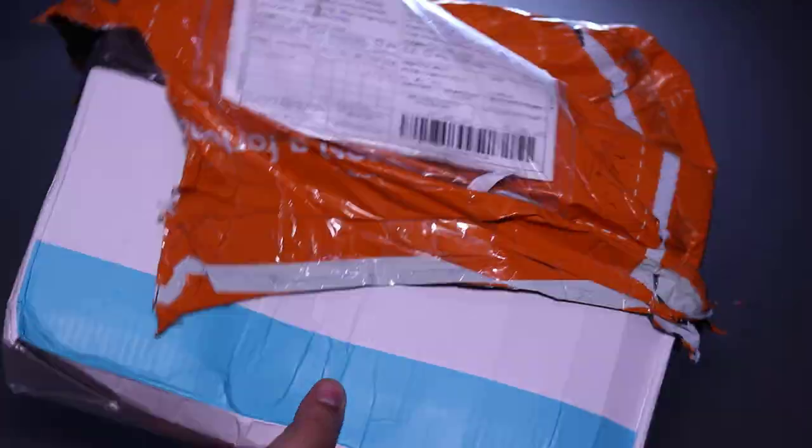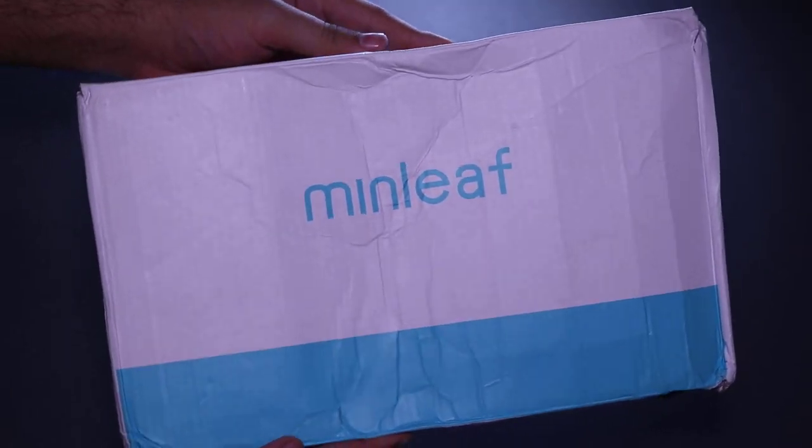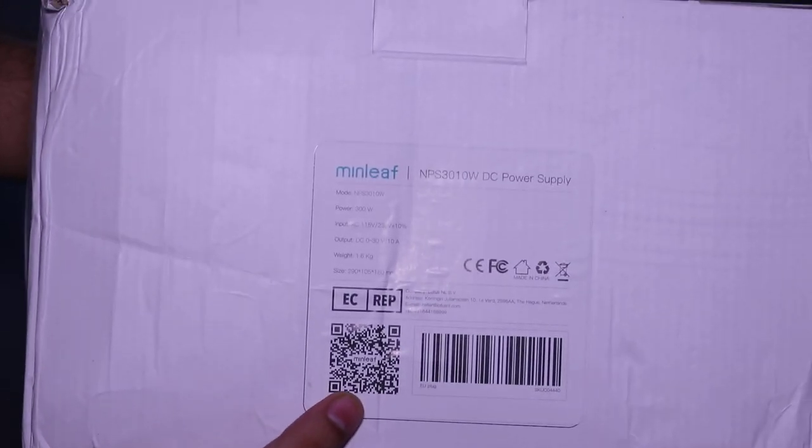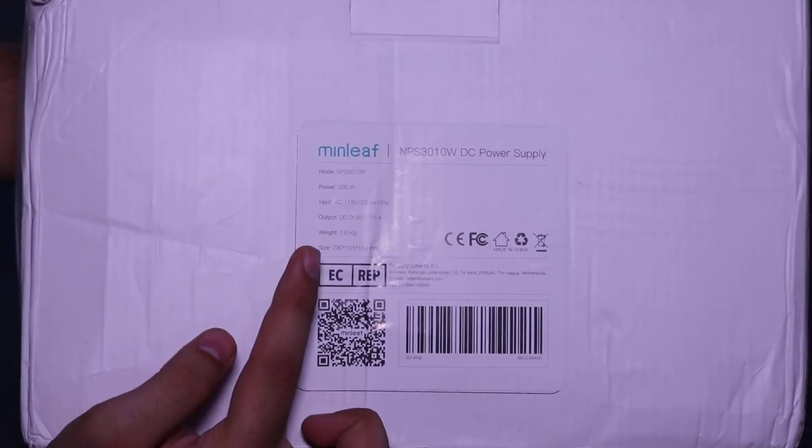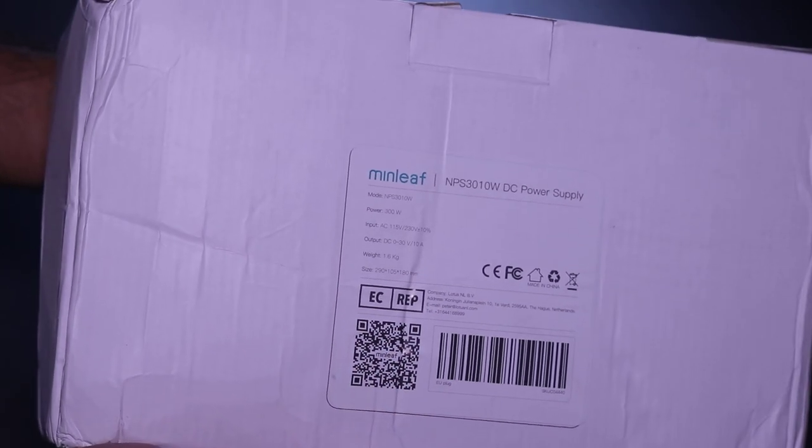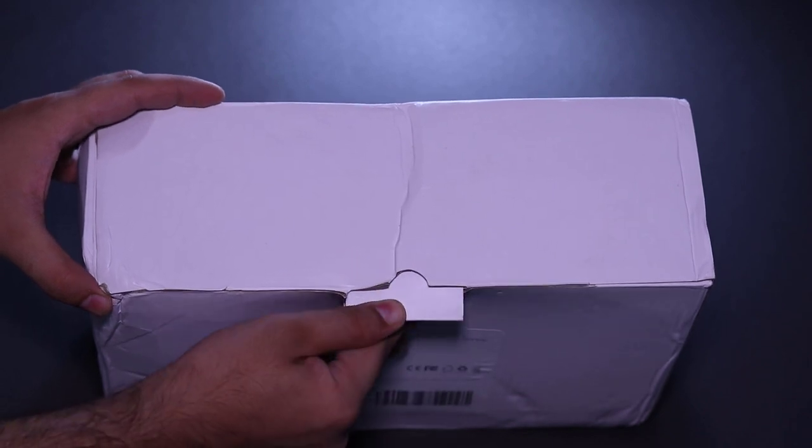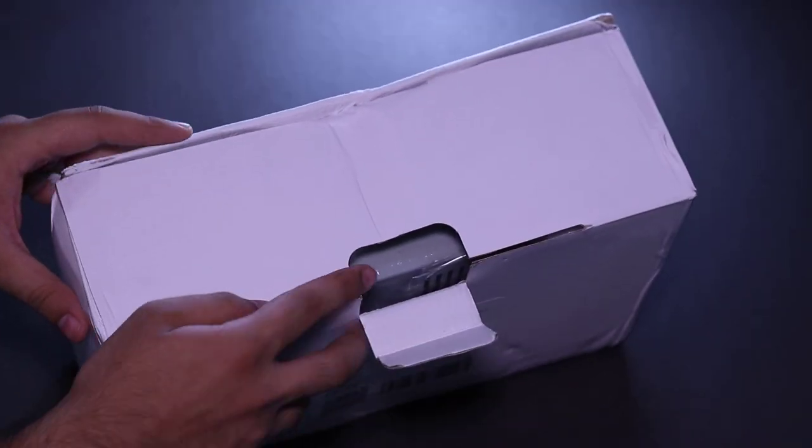Now let me unbox the package and show you the first look of my new variable power supply. As you can see on the front side of the box there is a main leaf branding and on the back side some other useful details like model number, power inputs and output weight which is 1.6 kg. Now let's open the box.